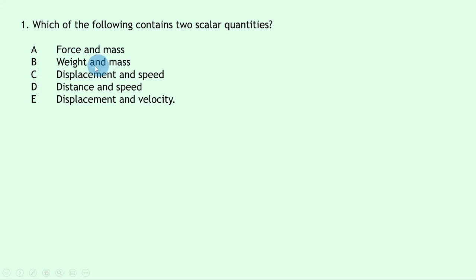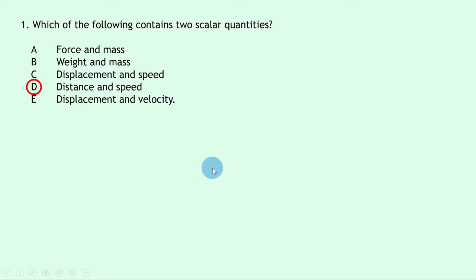Weight is a type of force so it's also a vector, eliminating B. Displacement is a vector, eliminating C. For D, distance and speed are both scalars, so that is our answer. Displacement and velocity in E are both vectors. The answer is D.